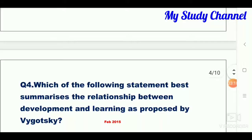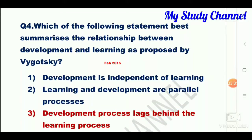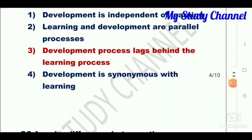Question number five: which of the following statements best summarizes the relationship between development and learning as proposed by Vygotsky? Option one is development is independent of learning; second is learning and development are parallel processes; third is development process lags behind the learning process; fourth is development is synonymous with learning. Option three is the right answer — development process lags behind the learning process.